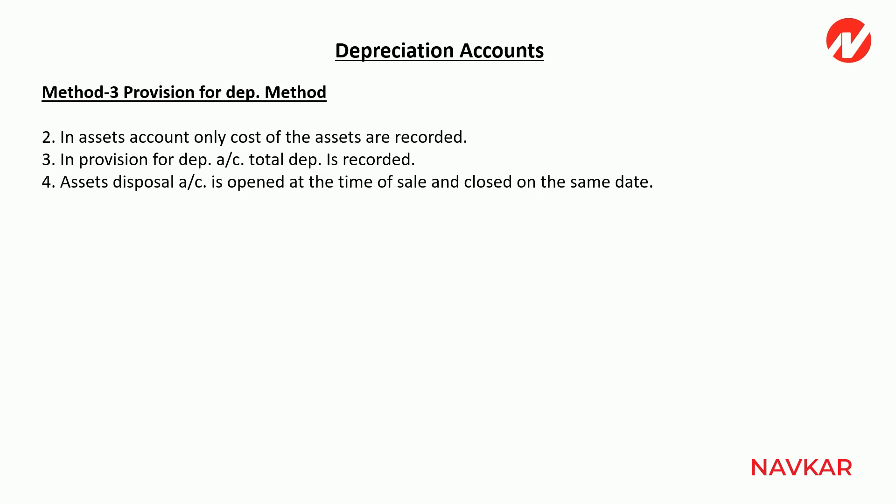For the Provision for Depreciation method, the closing balance of the Asset Account will be the cost of assets not yet sold. The closing balance of the Provision for Depreciation Account must also be calculated, and the Asset Disposal Account is compulsorily closed.